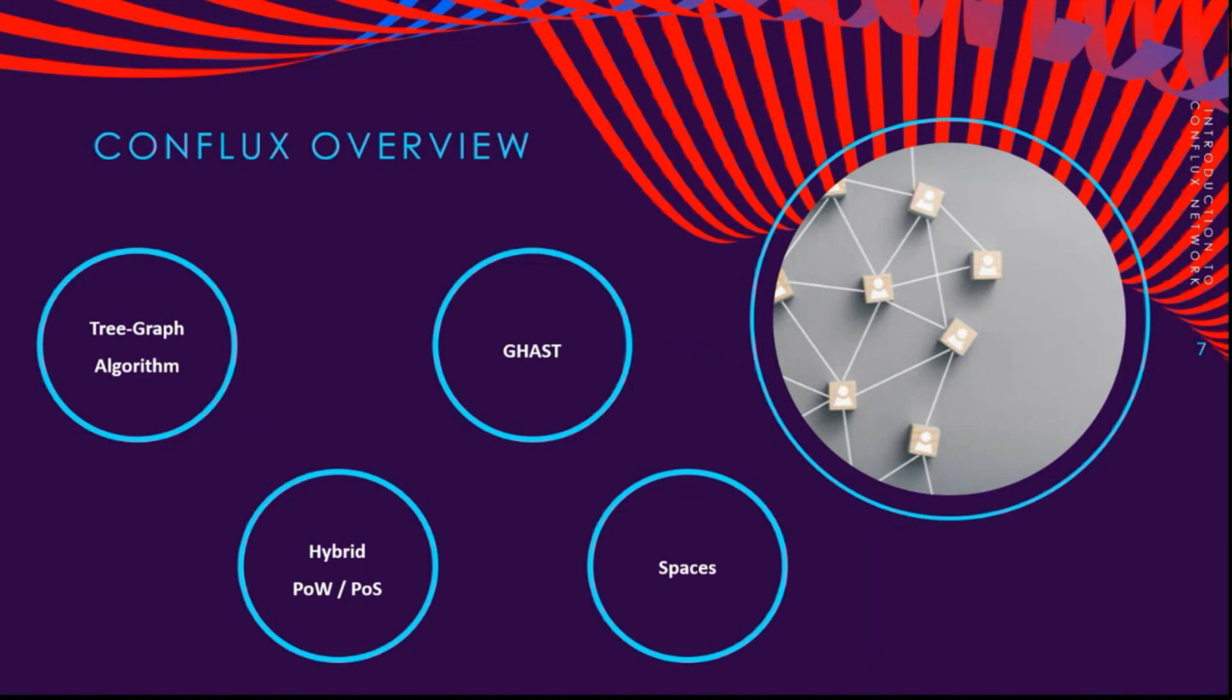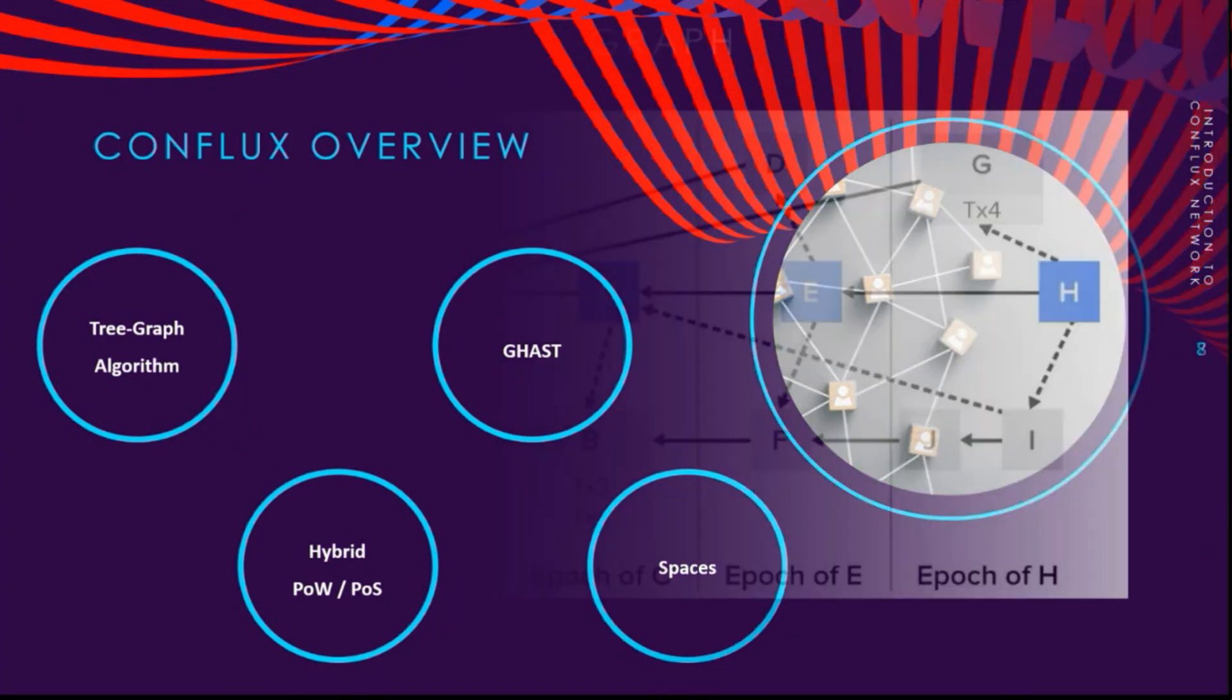The final element is the Spaces. As some of you might know, Conflux has two different spaces. One is called Core Space and the other one is called eSpace. Core Space is the original chain and provides more throughput, while eSpace is a space designed to be fully compatible with Ethereum Virtual Machine. We will also go deeper into all of these topics in a couple of minutes. First of all, let's start with the tree-graph algorithm.